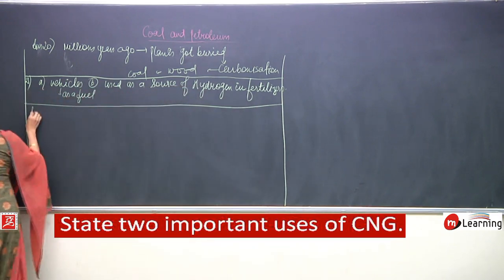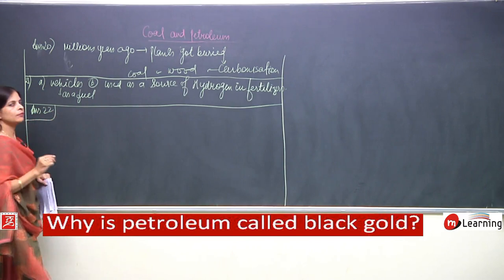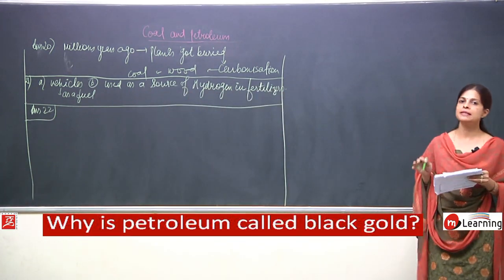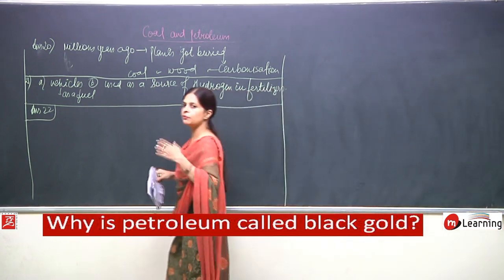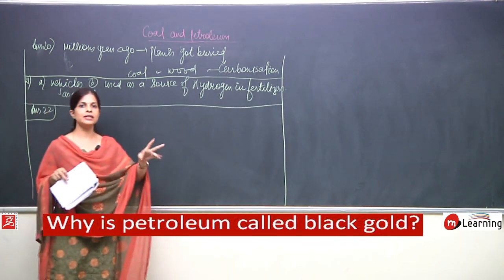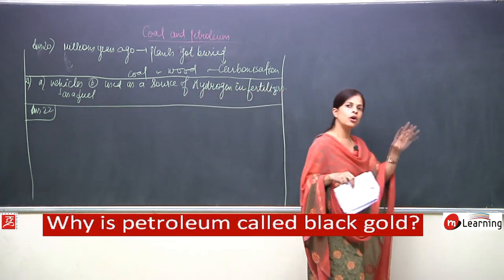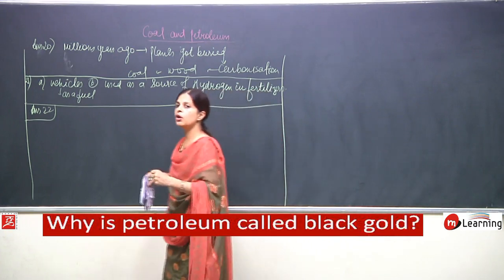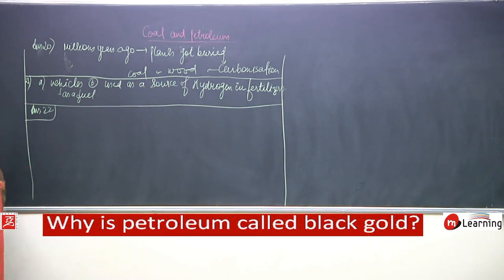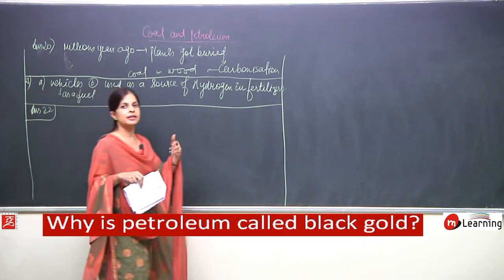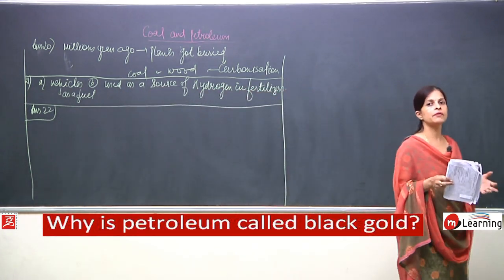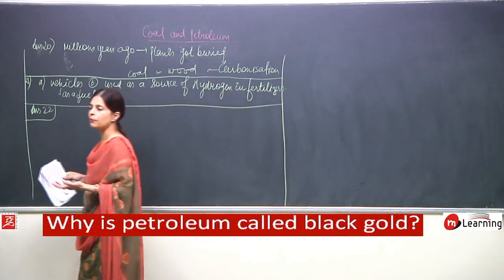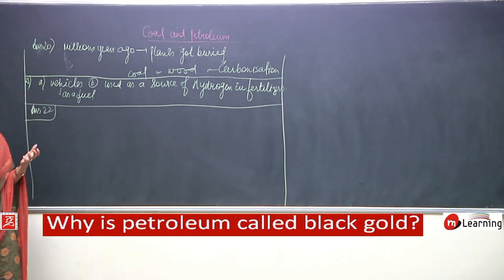Answer number 22: why is petroleum called black gold? Petroleum is made up of two words - petra meaning rocks and oleum meaning oil - the oil which is trapped between the rocks. It is known as black gold because the economy of the country depends upon petroleum. Many important components come out and are used in the manufacture of various things, and many fuels are obtained from petroleum.